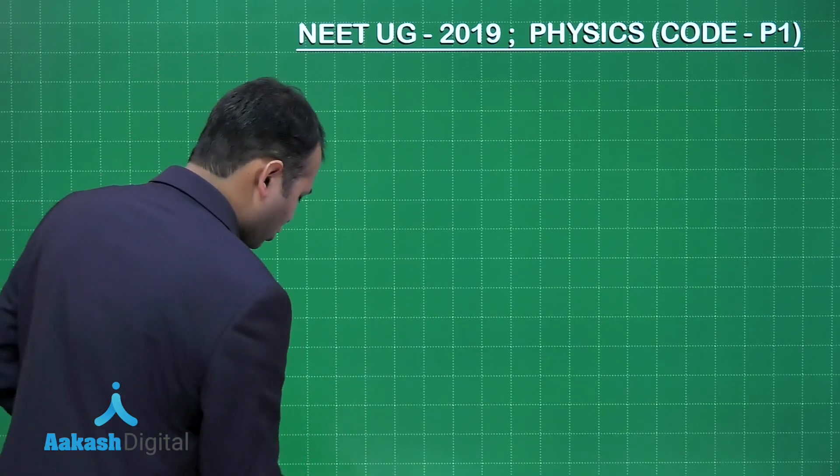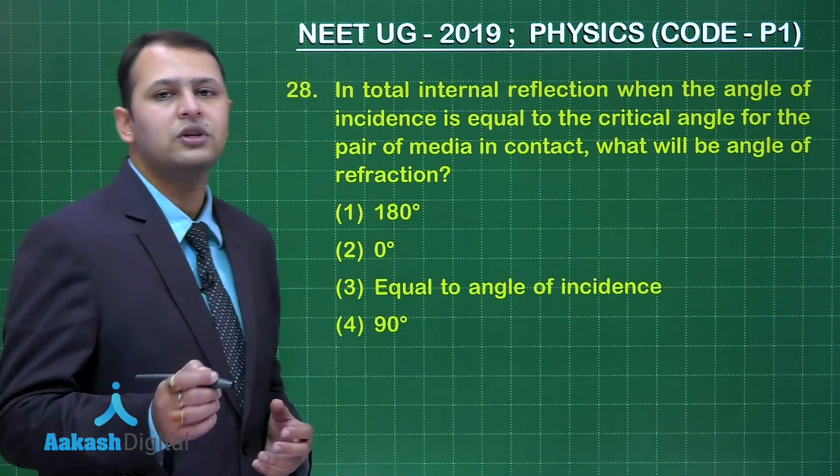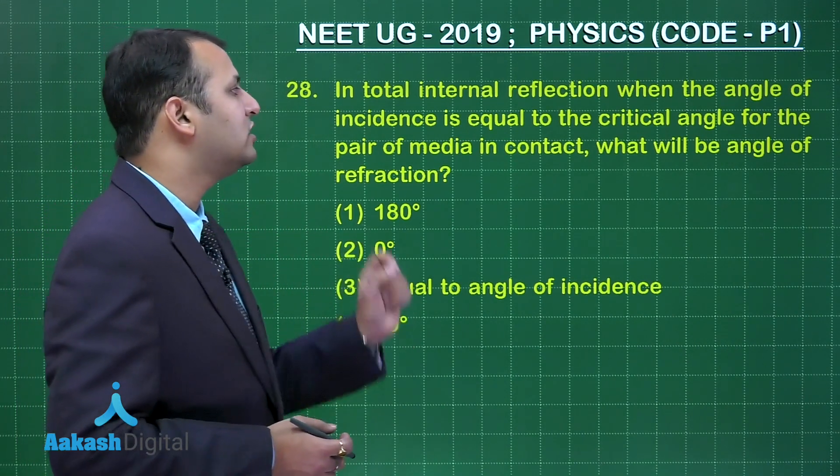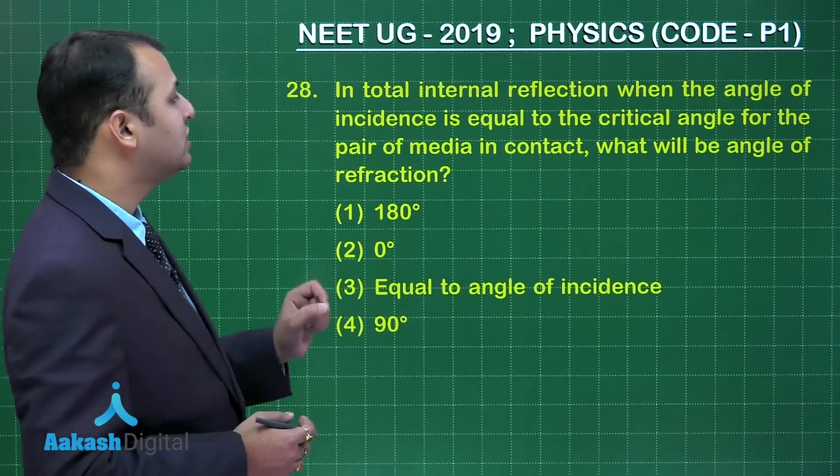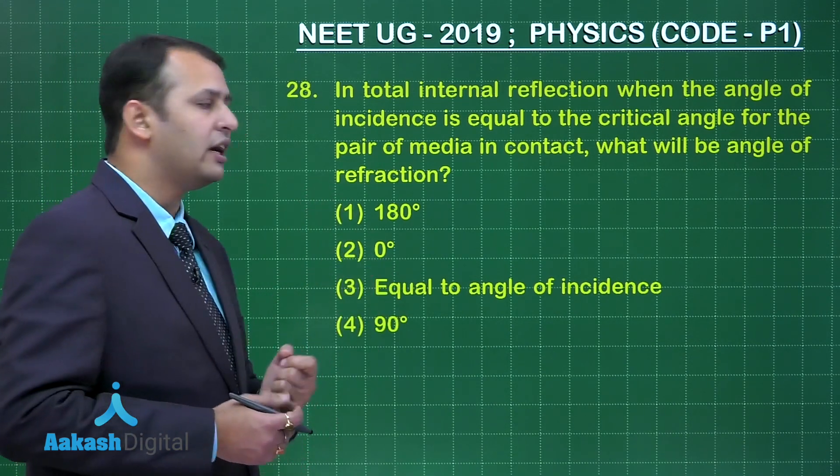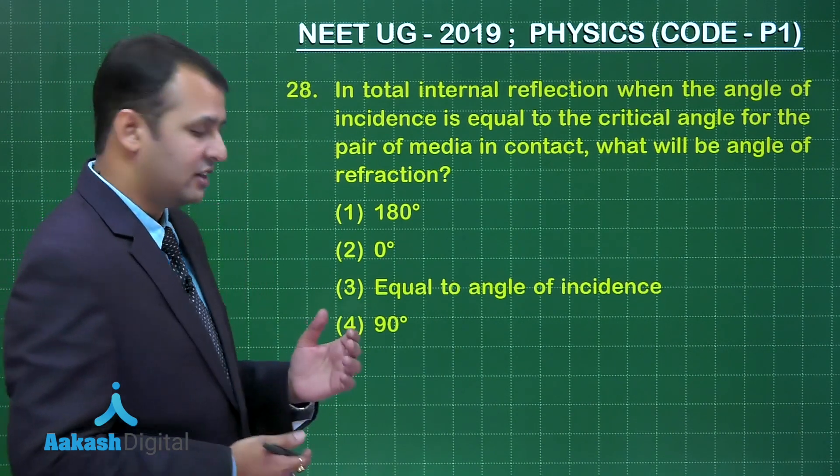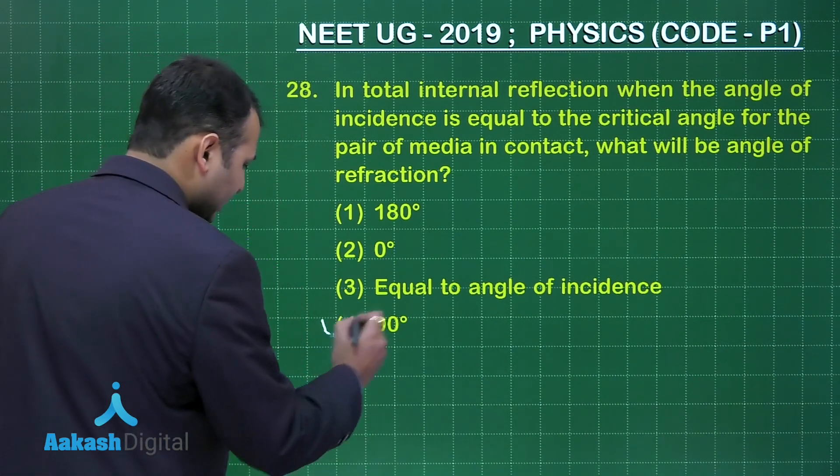Let's start with the next question, question number 28. The question belongs to chapter Ray Optics. As per the question, in total internal reflection when the angle of incidence is equal to the critical angle for the pair of media in contact, what will be the angle of refraction?